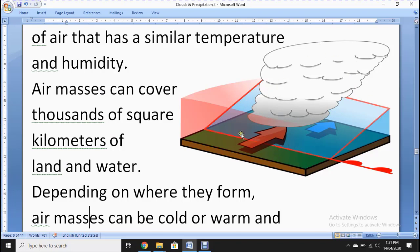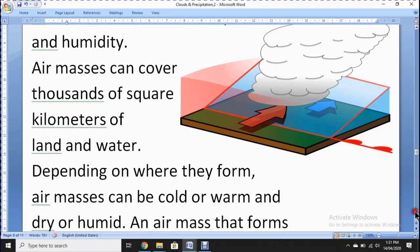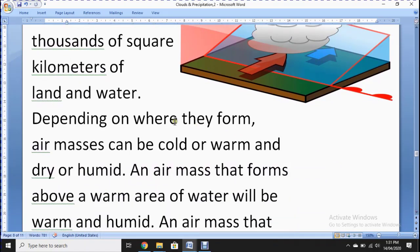Depending on where they form, air masses can be cold or warm and dry or humid. Temperature can be high or low. Dry means without water, while humidity means it contains moisture.